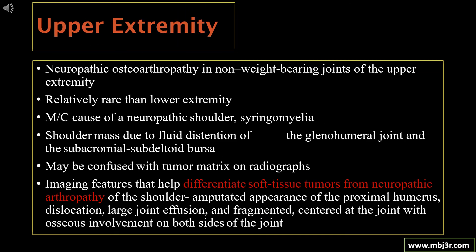Neuropathic osteoarthritis in non-weight-bearing joints of the upper extremity is relatively rare compared to the lower extremity. The most common cause of neuropathic shoulder arthritis is syringomyelia. Patients present with a shoulder mass due to fluid distension of the glenohumeral joint and subacromial-subdeltoid bursa, which may be confused with a soft tissue tumor on MRI and radiographs.